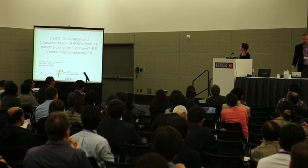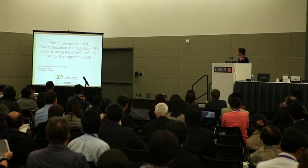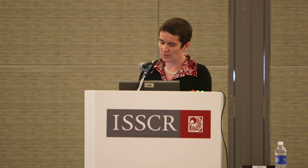Getting to the next part: the generation and characterization of IPS cells from Parkinson's donor cell lines using the Sendai reprogramming kit — we had a poster last night on that. The Sendai virus addresses a lot of the major challenges for reprogramming. First, it does not integrate into the genome. It has a really high efficiency for hard-to-reprogram cell types, and you only need one transduction. It's an RNA virus, so it replicates exclusively in the cytoplasm. It's non-pathogenic, and it has a broad tropism.